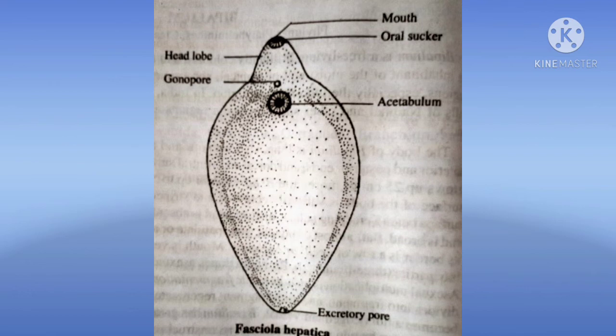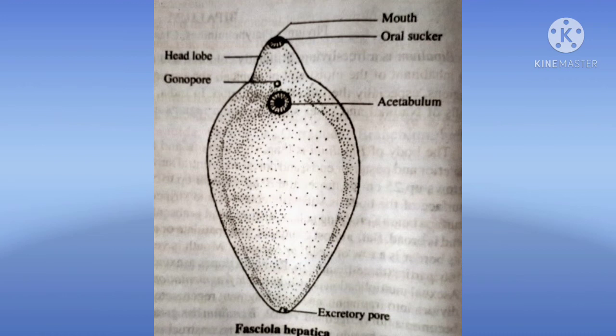An example is Fasciola hepatica, popularly known as the Sheep Liver Fluke. It is an endoparasite found in the liver of hosts such as sheep, cattle, horse, buffalo, rabbits, deer, and monkeys. It is attached to the liver and causes a serious disease called liver rot.